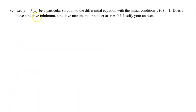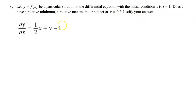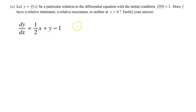Part C: Let y equals f(x) be a particular solution to the differential equation with initial condition f(0) equals 1. Does f have a relative minimum, a relative maximum, or neither at x equals 0? Justify your answer. We have two ways to determine this: the first derivative test and the second derivative test. Since the first derivative is written in terms of x and y, a sign chart is not practical, so we use the second derivative test.